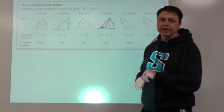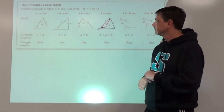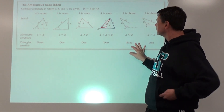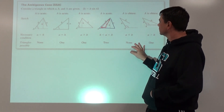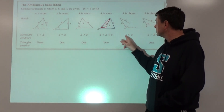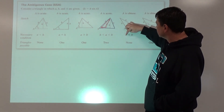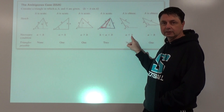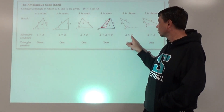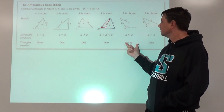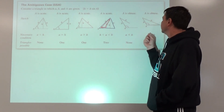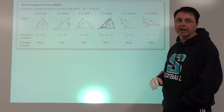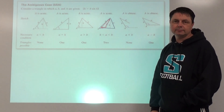If the angle is obtuse, there's no need to look for the height. If the opposite side isn't longer than the other — same length or shorter — you can't make a triangle. If the opposite side is longer than the other, you've got one triangle and jump right into it.